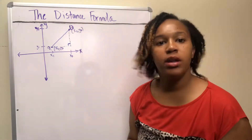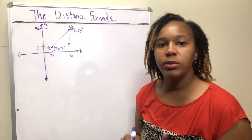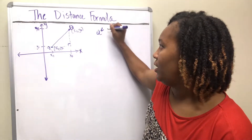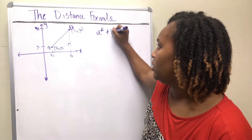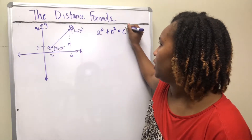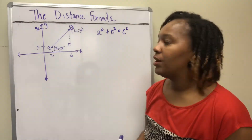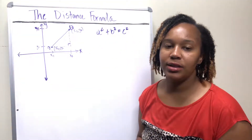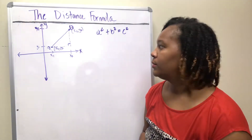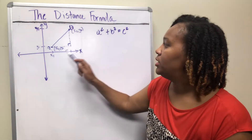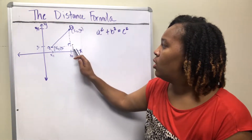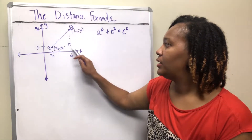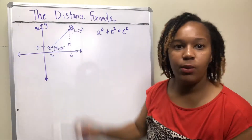The reason we create a right triangle is because we can then use the Pythagorean theorem, which says a² + b² = c², where a and b represent the two legs and c represents the hypotenuse. All we need to know is the lengths of those two sides, and we can figure out the length of the hypotenuse.